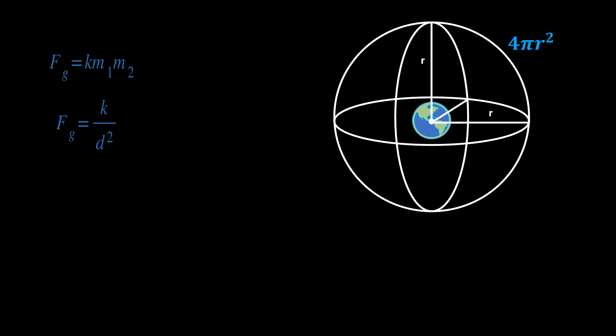Putting these two together, we can see that the attractive gravitational force between two bodies is some constant G times the product of their masses over the square of the distance between their centers. And so the gravitational force of the Earth is equal to G times the mass of the Earth, times the mass of the body being attracted, over the square of the distance, which is just the radius of the planet Earth.